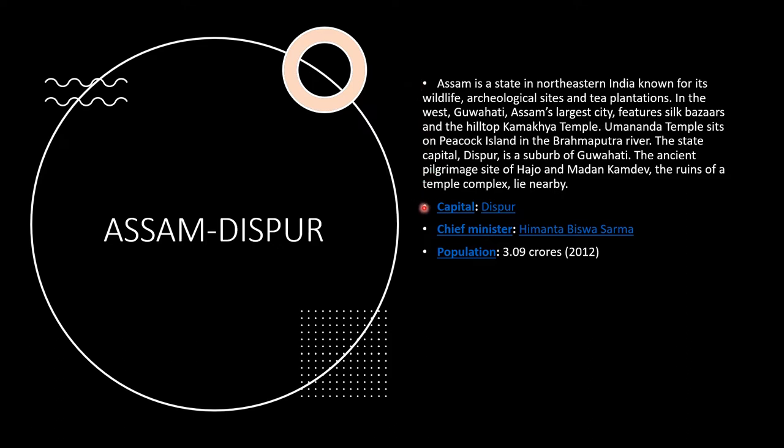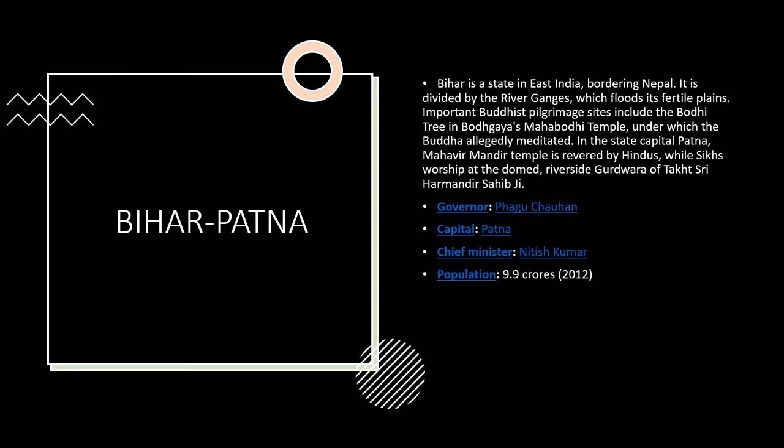The capital is Dispur and the chief minister is Himanta Biswa Sharma. Population is 3.9 crores in 2012.